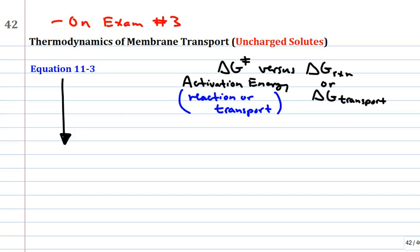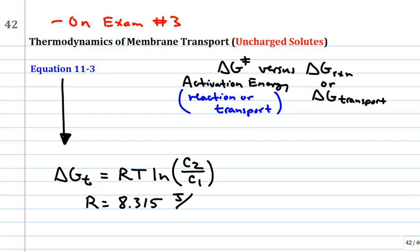This all hinges on the first equation which requires that the solute be uncharged. So this will not work for anything that's charged. The first equation is 11-3. It's delta G of transport equals RT natural log of C2 over C1. And of course C1 and C2 are concentrations. R is the gas constant 8.315 joules per mole per Kelvin. The temperature has to be the absolute temperature in Kelvin. We know that degrees centigrade plus 273 equals the temperature in Kelvin. Just a little trivia here, you don't put the degree sign for Kelvin because you just don't do that.